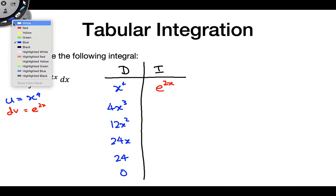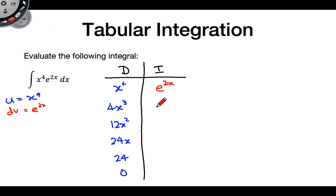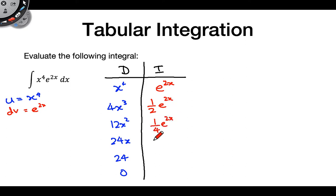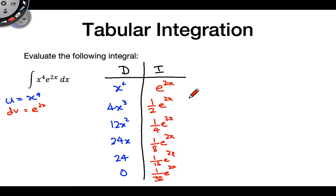Now over here for integration, it's a little bit longer. Because of this 2 in the exponent, we have a little bit of an implicit u substitution. The integral of e to the 2x is one half e to the 2x. Then we have one fourth e to the 2x, one eighth e to the 2x, one sixteenth e to the 2x, and last but not least, one over 32 e to the 2x — because we keep multiplying by one half at each iteration.